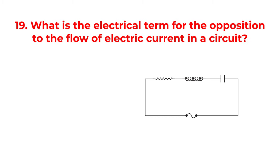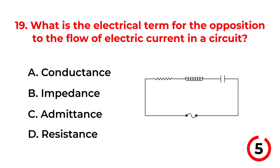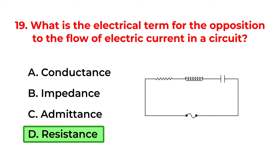What is the electrical term for the opposition to the flow of electric current in a circuit? A. Conductance. B. Impedance. C. Admittance. D. Resistance. The correct answer is option D: Resistance.